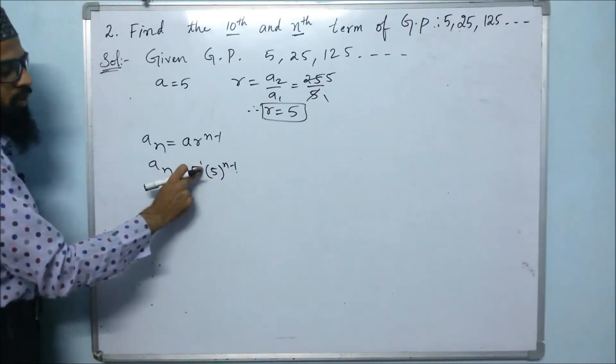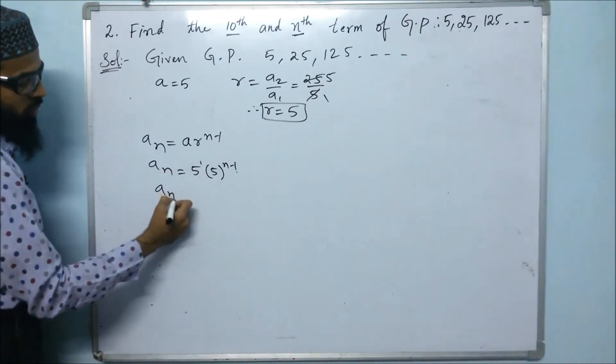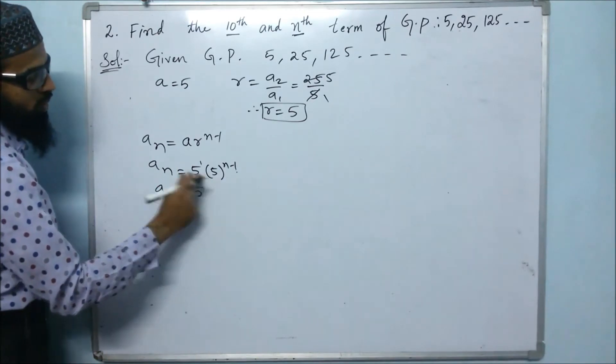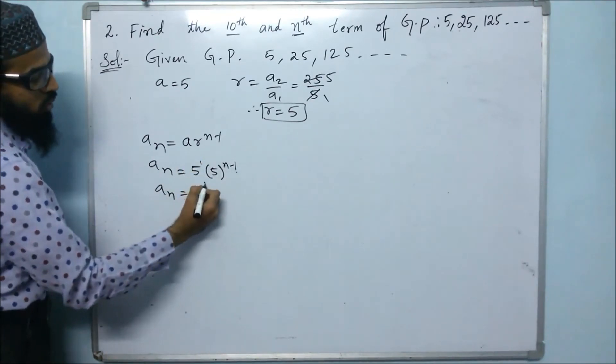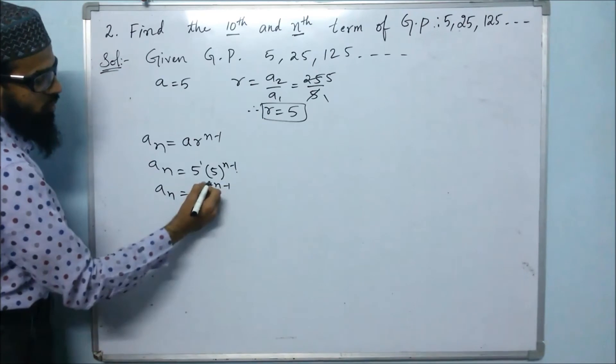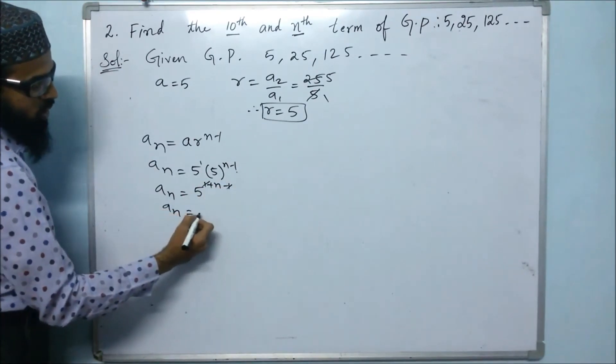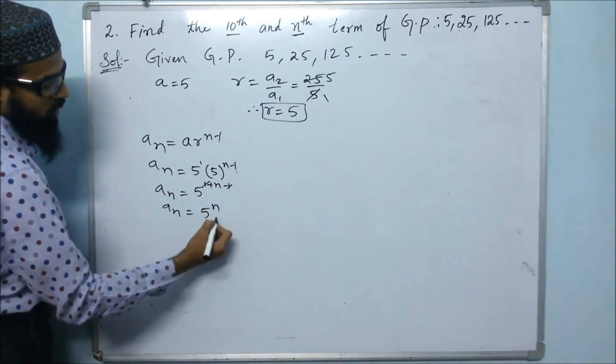Here the power is 1. When the bases are same, powers should be added. So 1 plus n minus 1. 1 and 1 get cancelled. Therefore, an = 5^n.